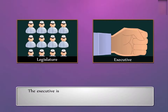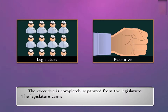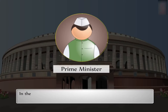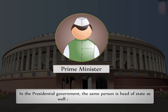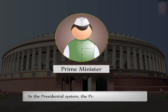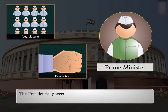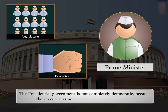In contrast, in the American presidential system, the executive is completely separated from the legislature. The legislature cannot remove the executive through a no-confidence motion. In the presidential government, the same person is head of state as well as head of government, and the President is most powerful. The presidential government is considered less democratic because the executive is not accountable to the legislature.